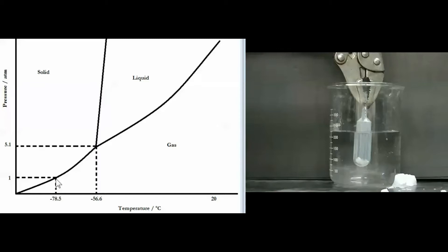As the dry ice was placed into the pipette and clamped both the temperature and the pressure of the dry ice went up. So we started to move along this solid gas equilibrium line. As the gas built up in the pipette, the pressure increased and the temperature increased from warming from the water.